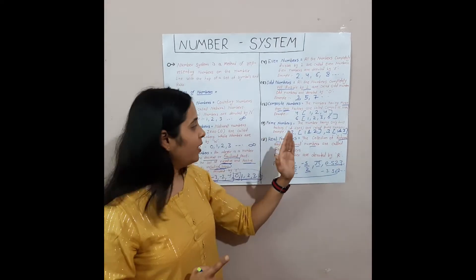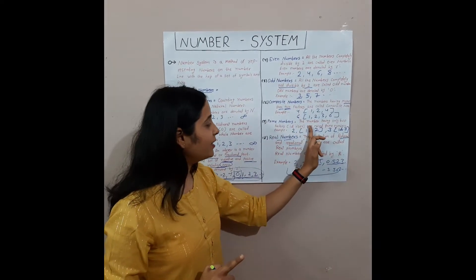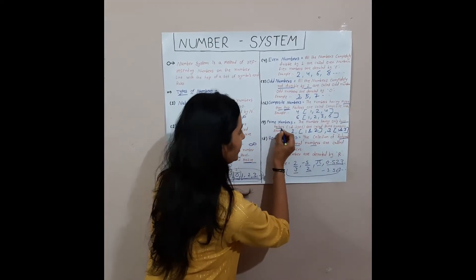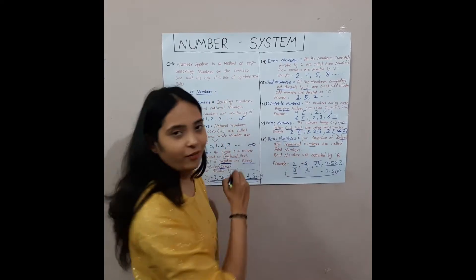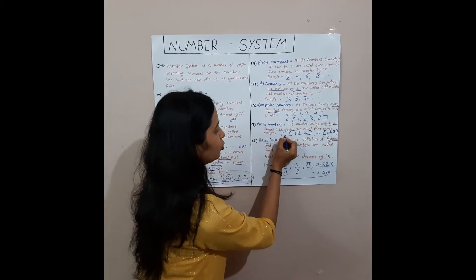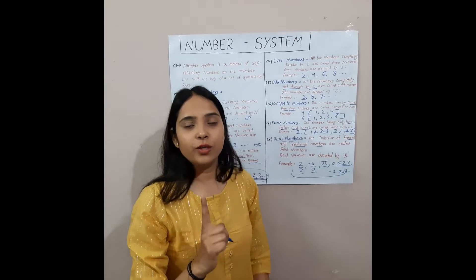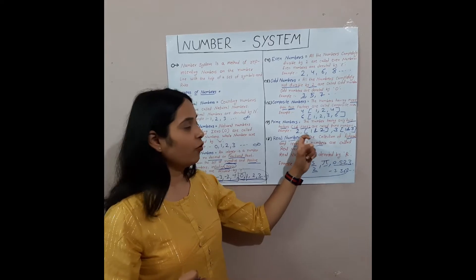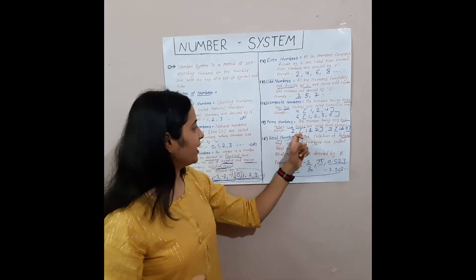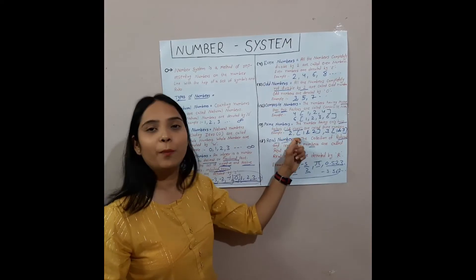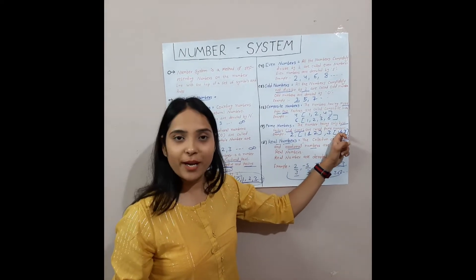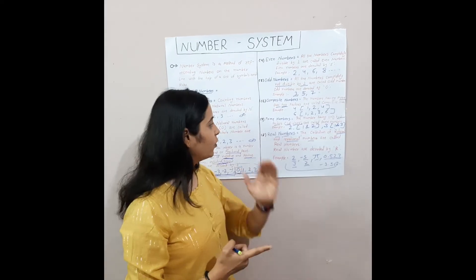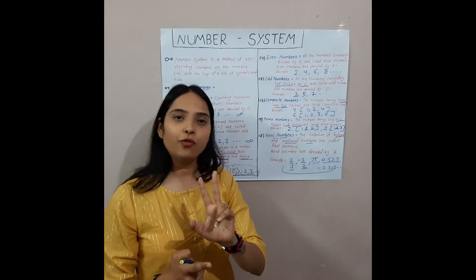Next is the prime number. A prime number is a number having only 2 factors: 1 and itself. For example, 2 has factors 1 and 2, meaning it has only 1 and itself, so it is a prime number. 3, 5, and 7 are also prime numbers, because these numbers have only 2 factors: 1 and themselves.